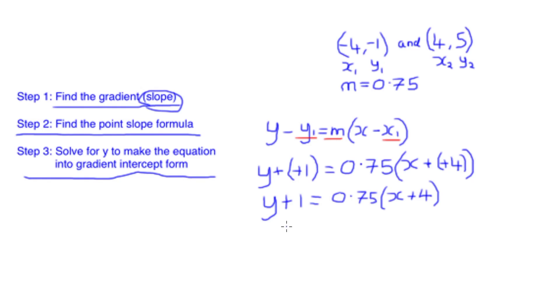First of all, remembering the rules of BIDMAS, we're going to separate out these brackets. So 0.75 times x remains 0.75x, and then 0.75 times 4 gives us 3. We'll leave the y plus 1 at the beginning of the equation the same before we finally solve the equation.